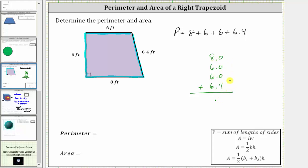Then we add the rightmost place value: 0 plus 0 plus 0 plus 4 is 4. And now adding the ones place value, 8 plus 6 is 14, plus 6 is 20, plus 6 is 26. The perimeter of the right trapezoid is 26.4 feet.